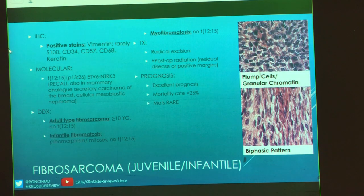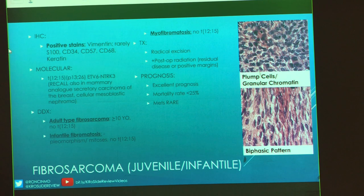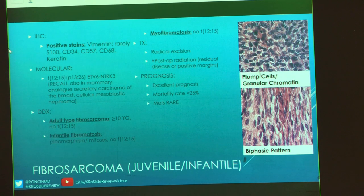Stains: vimentin — you don't have to do vimentin, it's very common across all sarcomas, so it's not necessarily going to help you figure out this is a sarcoma. Other stains like S100, CD34 for vessels, CD68, and keratins can be present, but none are really a slam dunk for fibrosarcoma. The molecular involves the ETV6-NTRK3 translocation — t(12;15)(p13;q26). There's a whole list of things including these translocations in the handout.